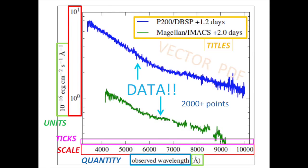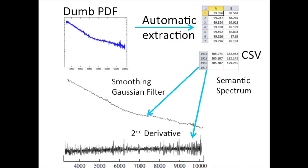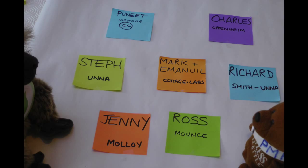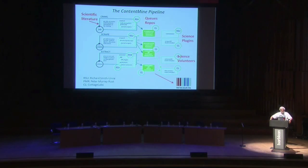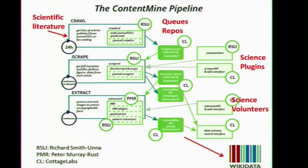Every bit of information in this image has been extracted and can be further manipulated. Richard and the rest of the team have a generic solution. We've built an ecosystem of open source software for data mining the entire academic literature, and we've also grown a community of volunteers who help us maintain it. Now we're ready to go live and start doing content mining on a daily basis at massive scale. We start with the scientific literature — we crawl it, we scrape it, we extract it — and then we take the results and put them in Wikidata.